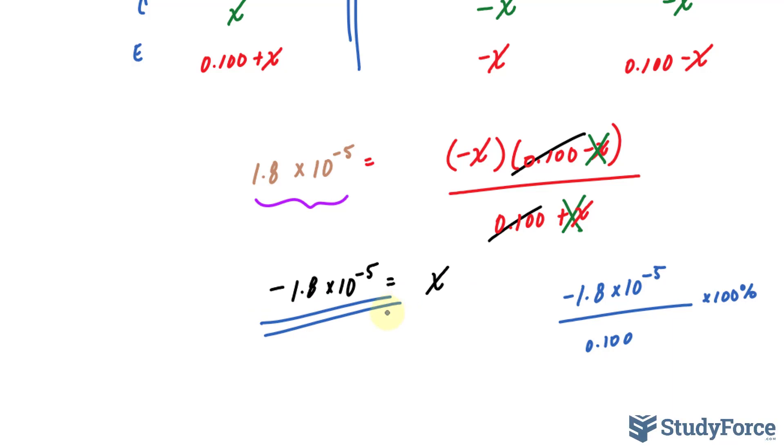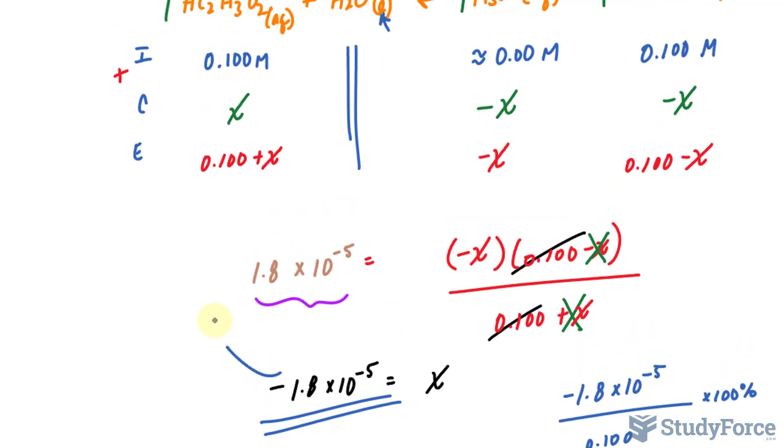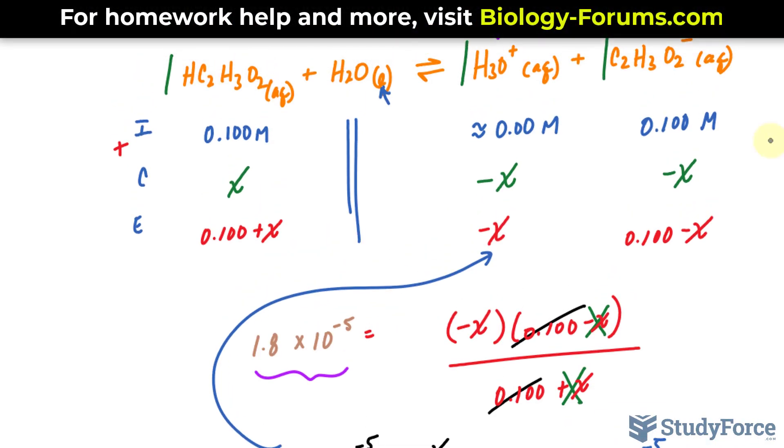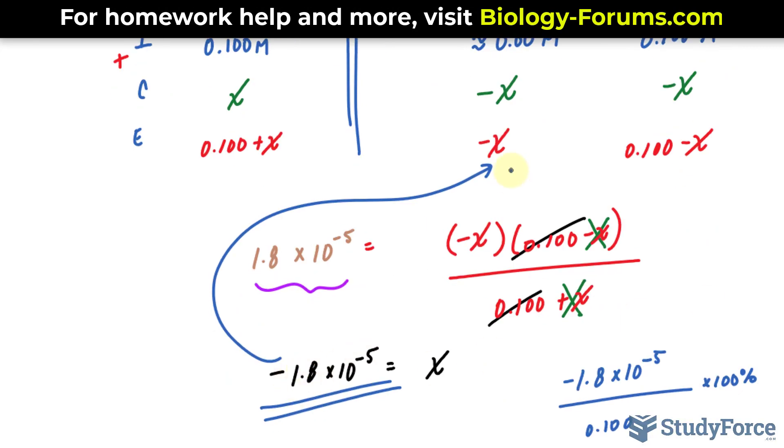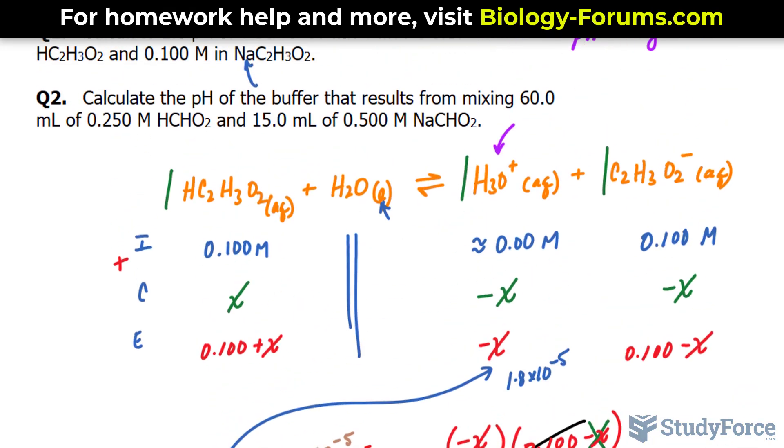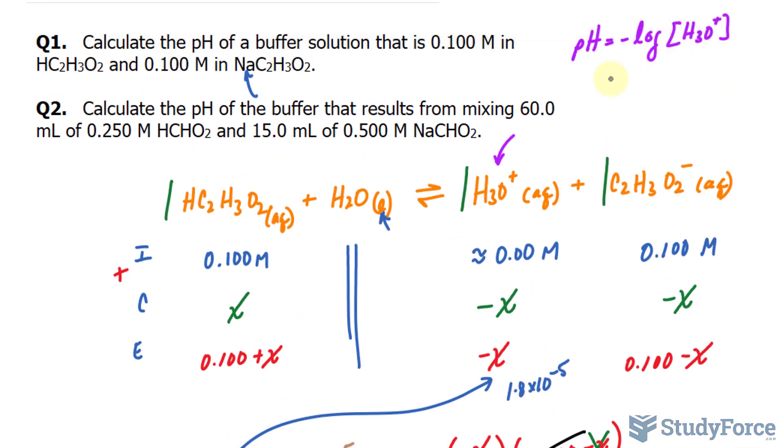This value right here represents x, and now I can substitute that right into here to find the concentration of H3O+. So the concentration of this molecule is exactly this number except the positive version. Let me write that down. And now I can use the definition for pH shown up here to find the pH of the solution. So negative log of this number, 1.8 times 10 to the power of negative 5.